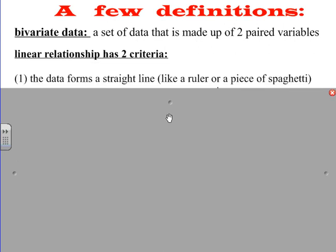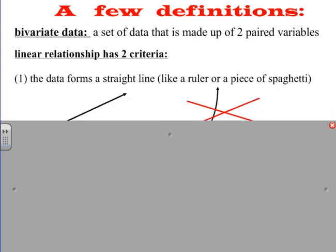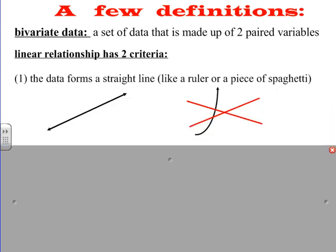The first requirement is the data forms a straight line like a ruler or a piece of spaghetti. If I took a look at these two lines here, we can see that one is linear and one is not linear. If we look at this one on the left, we can see that it forms a straight line like a ruler. This one on the right that has this curved line, we can see it doesn't. So that would not be a linear relationship.